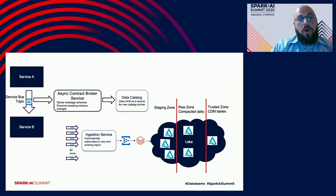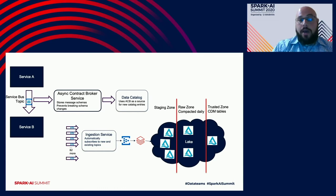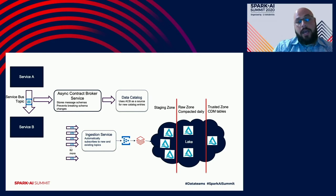But we already had a lot of services sending good data over async communication, and Service Bus made it very easy to add an additional subscriber. So we made a process that lets us automatically subscribe to topics on a voluntary basis and push all produced messages into the data platform. Data flowing via this route is saved as a delta table almost right away and cataloged as a separate entry in our data catalog with the same schema captured in the Async Contract Broker. Therefore, everyone wins.